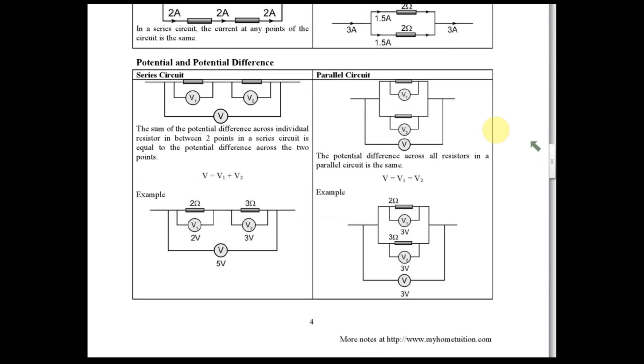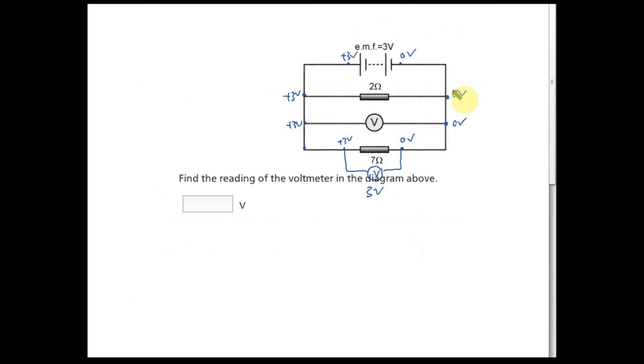Let me show you the notes. If here is 3 volts and here is 3 volts, then here must also be 3 volts. You put the voltmeter here — 3 volts. Put it here — also 3 volts. Put it here — also 3 volts.